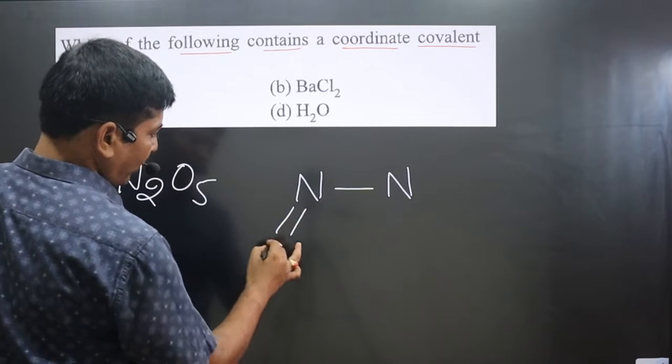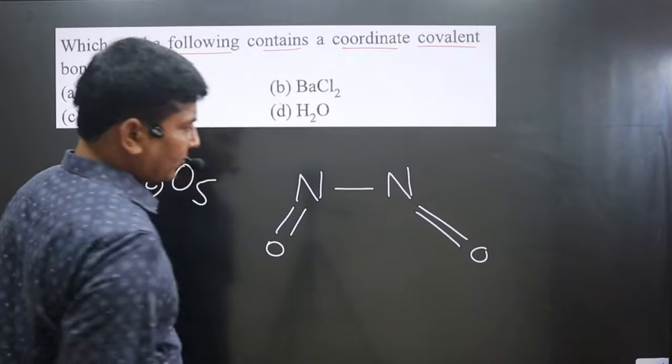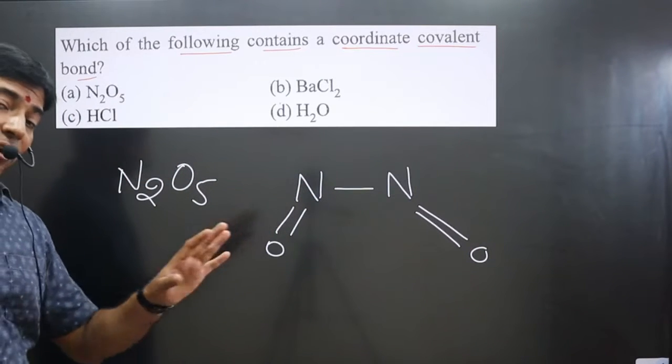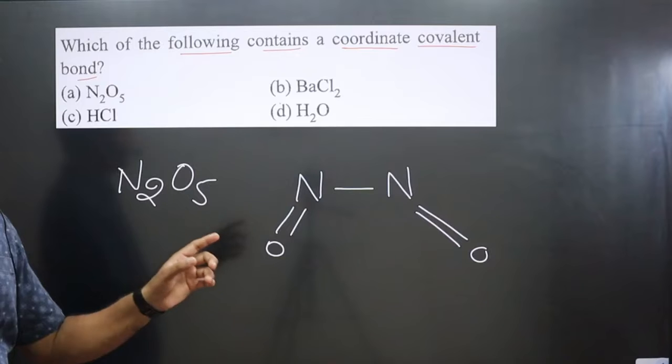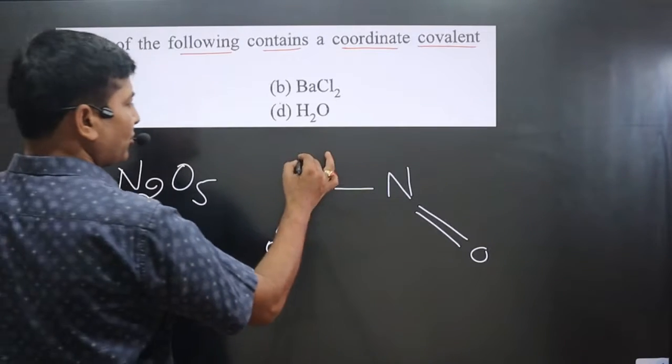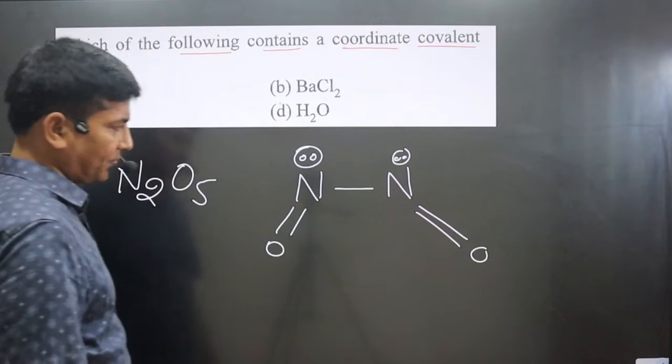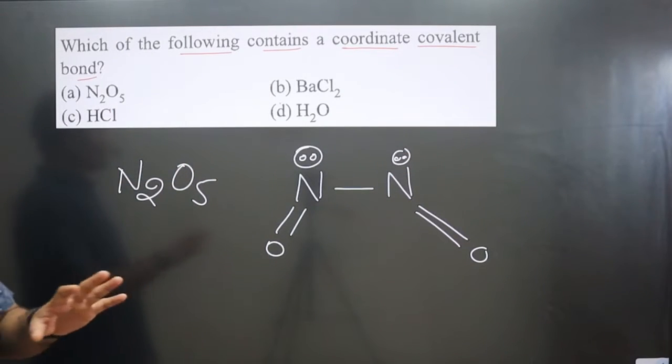Another oxygen is attached to the next nitrogen. You can see the valency of nitrogen is satisfied because nitrogen can form maximum three bonds. But each nitrogen has one lone pair. Still, we are left with three oxygens. Total five oxygens are there.